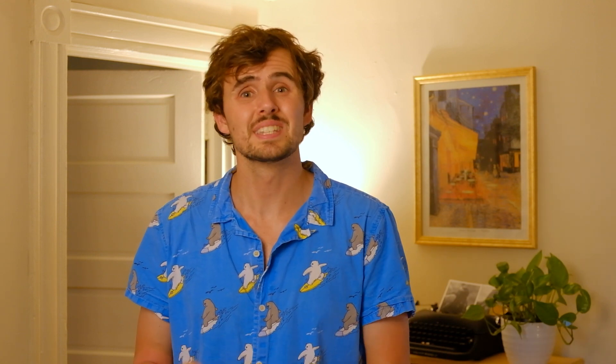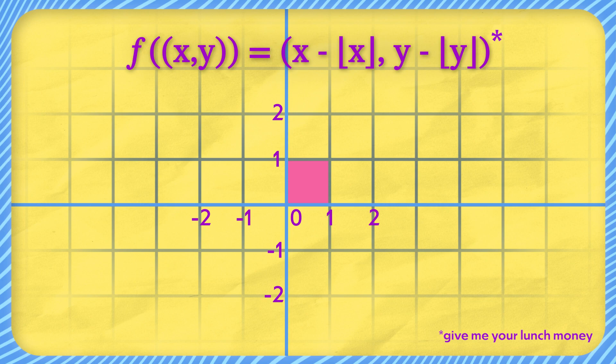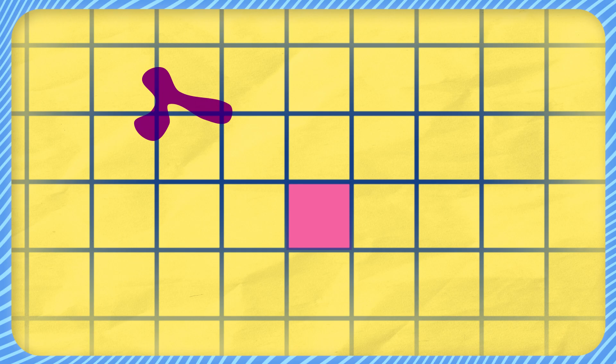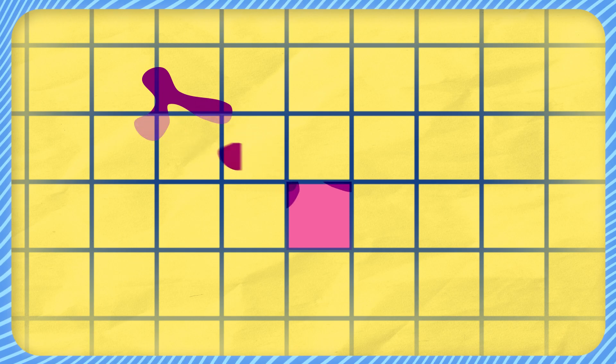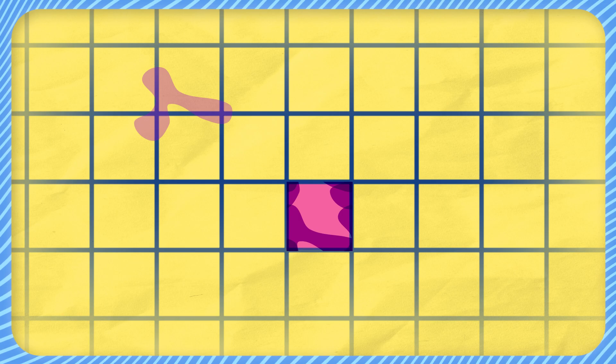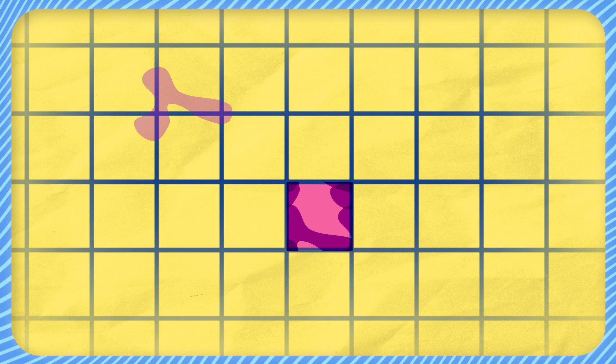For all you math nerds out there, if you were to label the grid like a Cartesian plane, this is how the function would look algebraically. Now back to the math jock content though. The beauty of connecting the infinite grid to this one single box is that remember, our shape lives in the grid. So if we pass our shape through this function, the output will be some interesting new shape that lives entirely in the reference box.